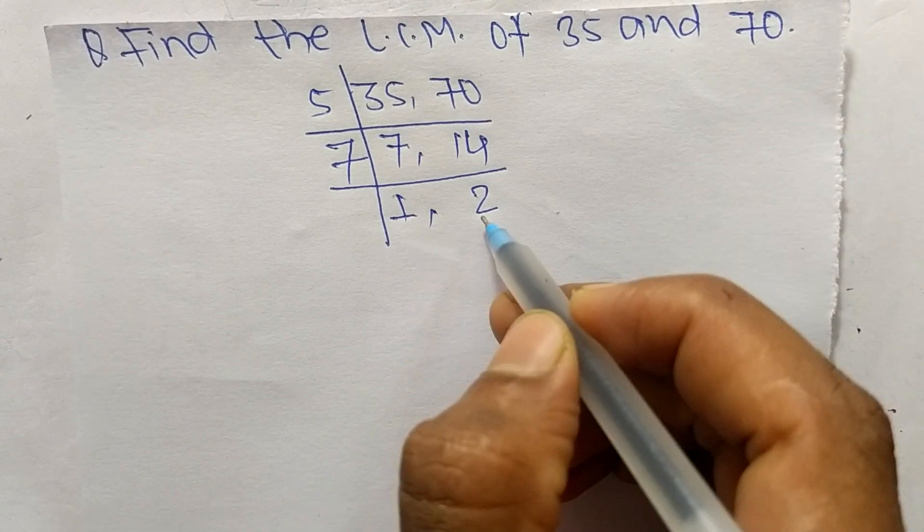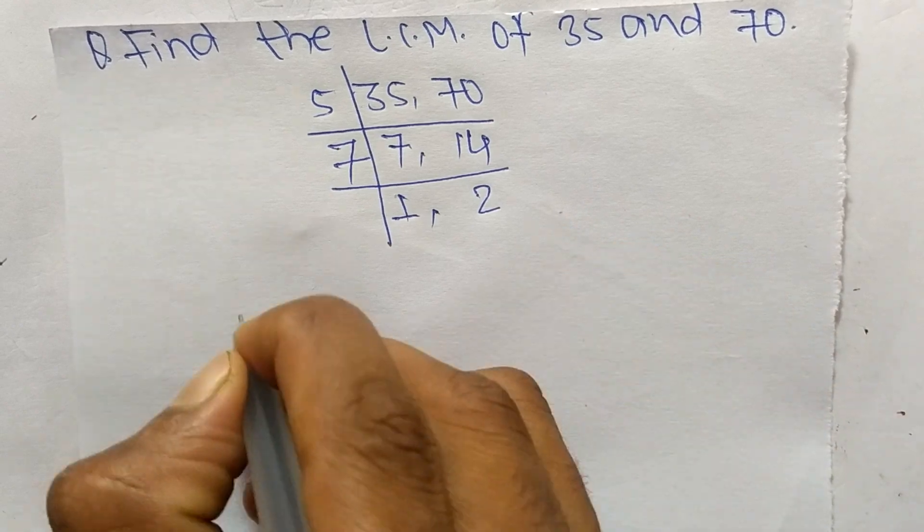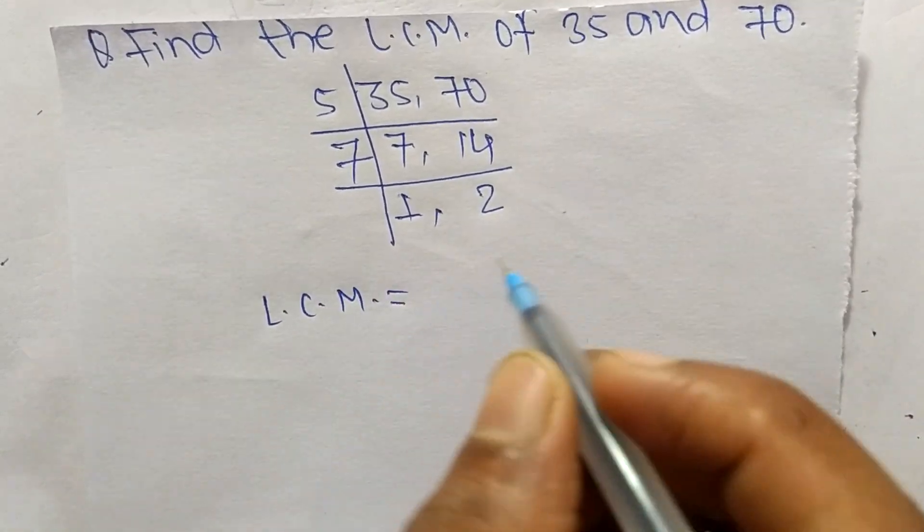At last we have 1 and 2 which are not exactly divisible by the same number, so the LCM is equal to...